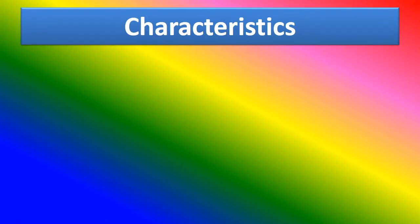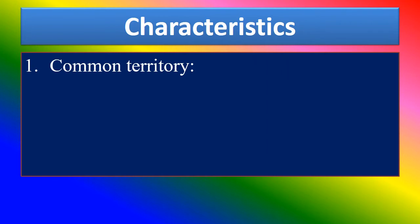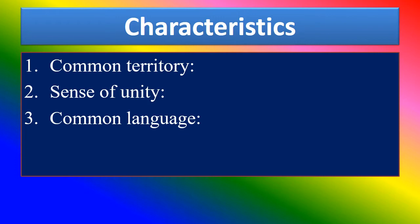Characteristics of tribal society. First characteristic: common territory, which means every tribal group has a definite territory. Second: sense of unity, meaning the people of a tribe have more cooperation than other societies. Third: common language — every tribal society has a unique language.